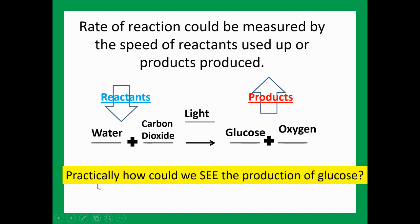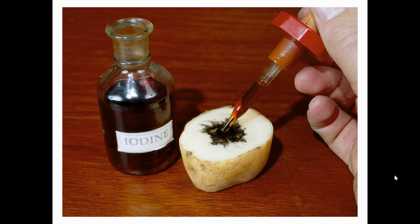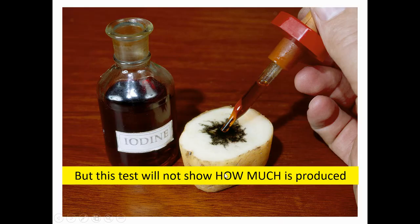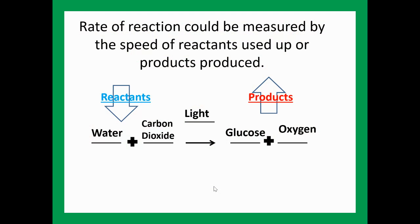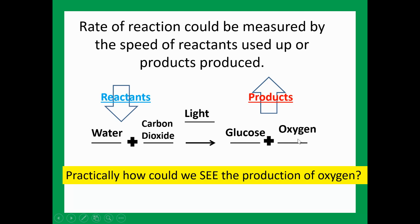Practically, how would you see the product production of glucose? You can do the chemical test using iodine — it will show up starch, and starch is made from glucose, so it proves that photosynthesis has happened. Unfortunately, we don't use the iodine test because this test only shows whether it has happened or not. It doesn't give us an idea of how much photosynthesis has gone on. Instead of using glucose, we're going to be looking at oxygen. We can use pond weed — an underwater plant — and when it produces oxygen, it produces visible bubbles.